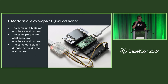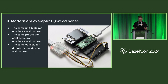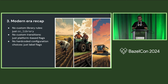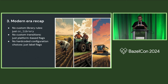To recap the modern era example of Pigweed Sense: you can run the same unit tests on device and on host, run the same production application on device and on host, and use the same Python console for debugging on device and on host. The modern era idea is to liberate ourselves from custom library rules (use just CC library), liberate ourselves from custom transitions (use platform-based flags and the generic platform_data rule), and avoid hard-coded configuration in third-party build files like FreeRTOS by using label flags.